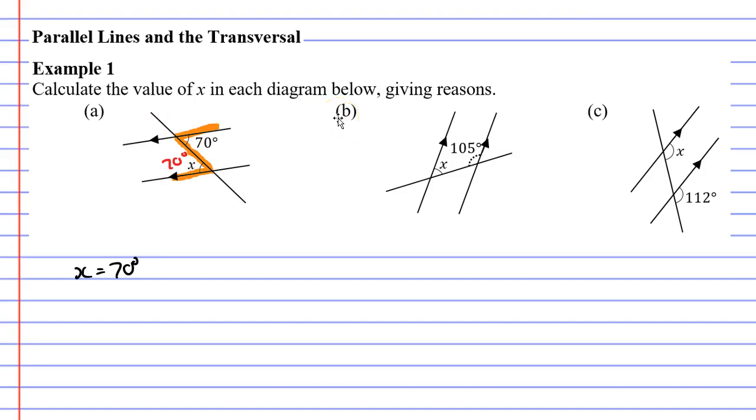The reason we're going to give is that they are alternate angles, because that's what we learned in the previous video. We learned that alternate angles are equal.